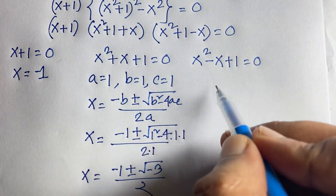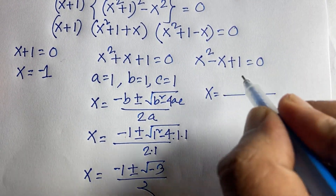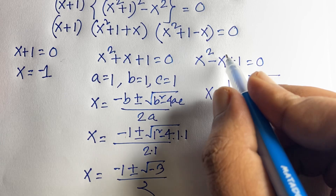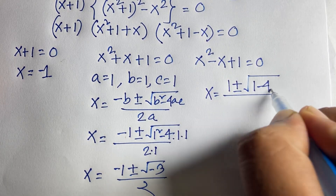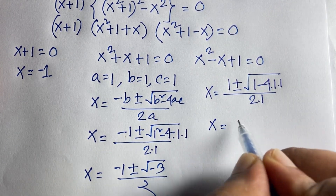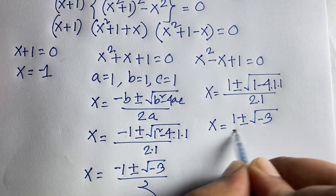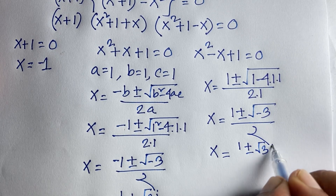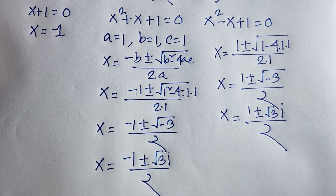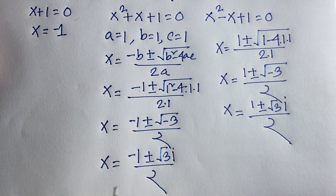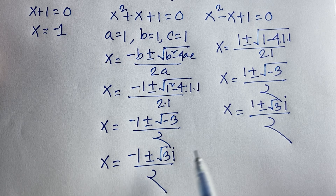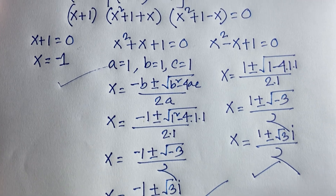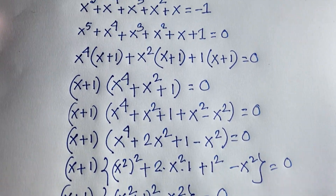For the third case, x squared minus x plus 1 equals 0, with a equals 1, b equals minus 1, c equals 1: x equals positive 1 plus or minus square root of 1 minus 4 over 2, giving x equals 1 plus or minus square root of minus 3 over 2, so x equals 1 plus or minus square root 3 times i over 2. These are our final answers. Thank you all — if you enjoyed this video, please subscribe to my channel for more interesting videos. Goodbye, take care.